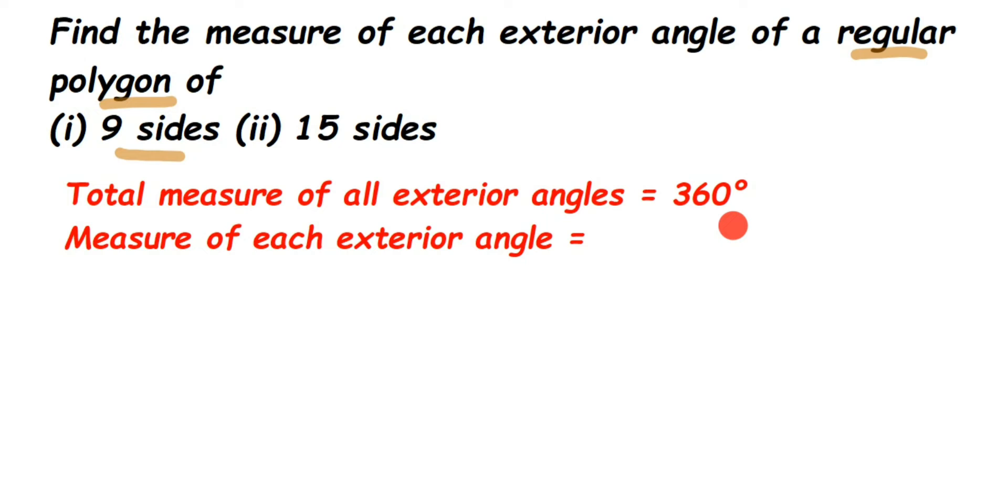So here we have a regular polygon. Regular polygon means that each angle, each exterior angle will be the same. Suppose we got 10 as an angle, one angle is 10, which means all the exterior angles will be 10 here. So how to find out?